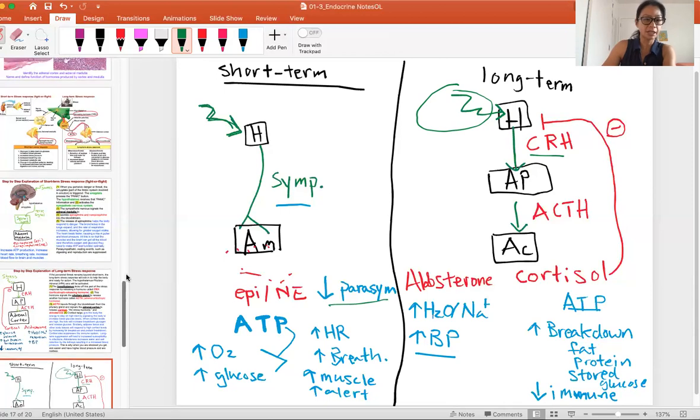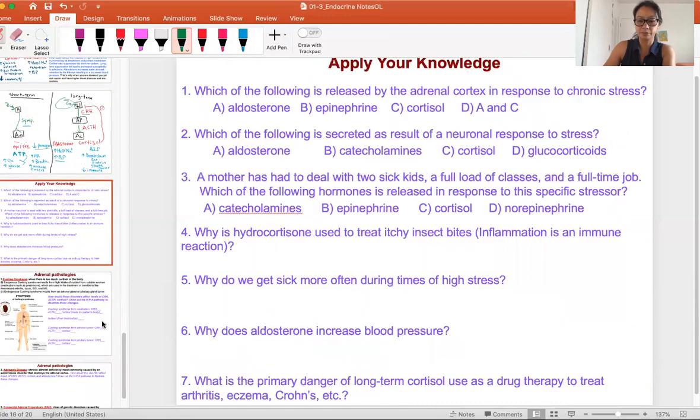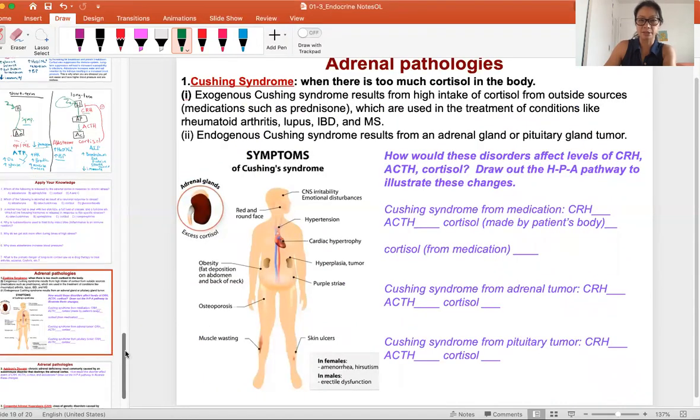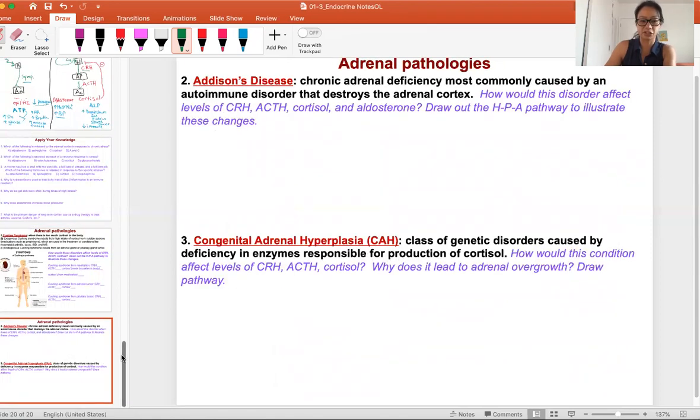There's a lot of complications that can go into here. You can read about the stress pathway and apply it to some questions. I also want you to apply it to some diseases or long-term consequences of the stress pathway and other adrenal pathologies as well. Draw it out, draw the HP axis.